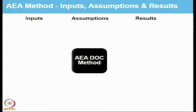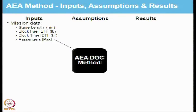The AEA method has three main components: inputs, assumptions, and results. The inputs to the AEA DOC method are the mission data. The stage length in nautical miles is the distance the aircraft is going to travel between origin and destination. The block fuel and block hour are respectively the total fuel expended and the total time spent from chocks on to chocks off. Number of passengers is also needed because certain costs are associated with handling each passenger at the airport.